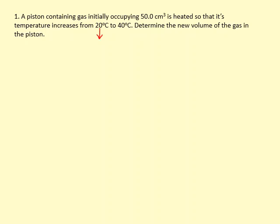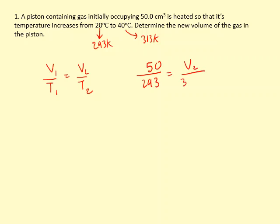Now we're ready to use V1 over T1 equals V2 over T2. So we put this in: 50 over 293 equals V2 over 313. Rearranging this, you get 53.4 cm³.